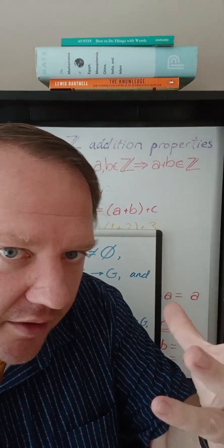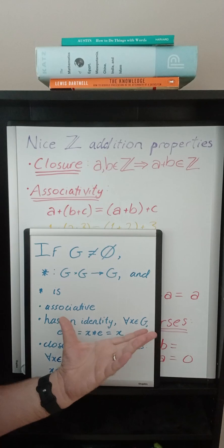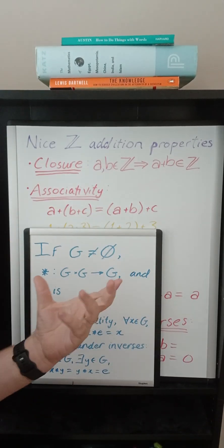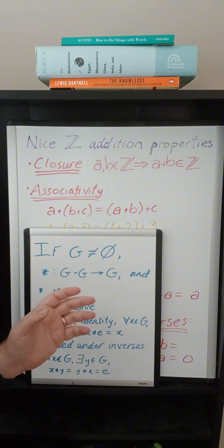Now it's going to turn out that a lot of the things that we're interested in have basically these properties and so we want to take this notion and abstract it into the idea of an abstract group.